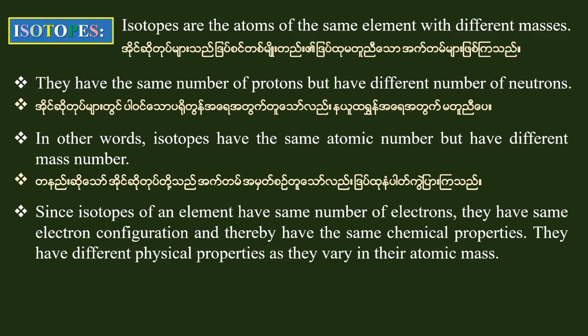Isotopes of an element have the same number of electrons, they have the same electron configurations and thereby have the same chemical properties. They have different physical properties as they vary in their atomic mass.